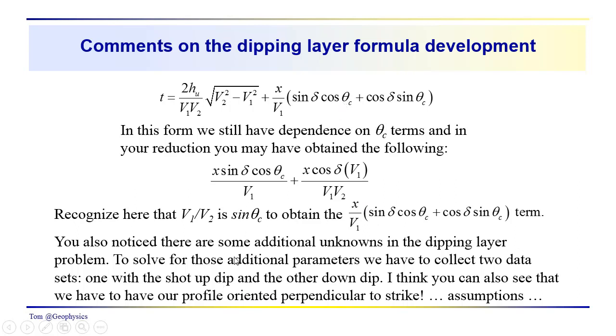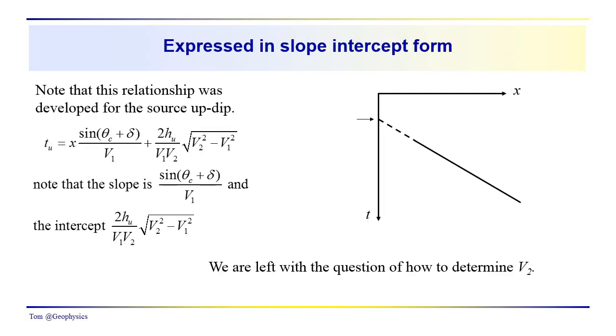Again, and probably harp on this over and over again, is that we're always making these assumptions. One of the important things in doing the refraction profiling is our profile is perpendicular to the strike of the local structure. Unless you know something about the area, that may not be the case. And if the profiles are not perpendicular, then our analysis is going to yield apparent velocities whether we're shooting from the up-dip direction or the down-dip direction. So assumptions, assumptions, assumptions. We always have to ask ourselves, what assumptions have we made? And in this case, we've made quite a few.